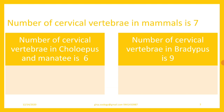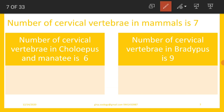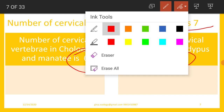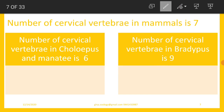The number of cervical vertebrae in mammals is seven — this is a very important point for NEET and M-SET. Cervical vertebrae are the vertebrae present in the neck region. There are certain exceptions: the number of cervical vertebrae in Choloepus and Manatee is only six, whereas in Bradypus it is nine. In the remaining mammals, the number of cervical vertebrae is seven.